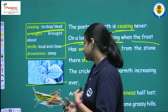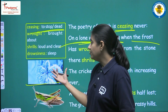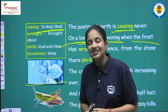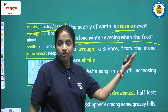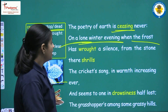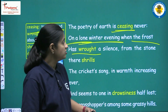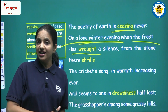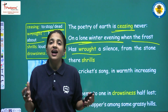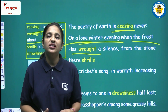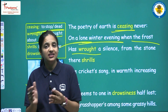'On a lone winter evening' — in winters, the evening becomes very lonely because all the people are inside their houses, and all the animals, creatures, and insects also find some shelter because of the cold. The winter evenings are generally very lonely. 'When the frost has wrought a silence' — 'wrought' means 'brought about.' Because of the frost, there is a kind of silence everywhere.